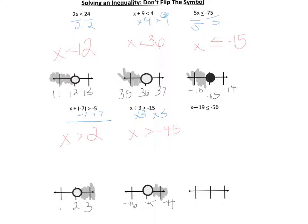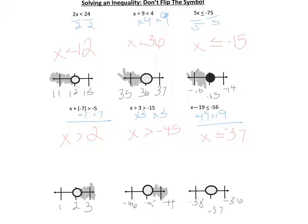For the last one on this page: x minus 19 is less than or equal to negative 56. We make a zero pair with 19 by adding 19 to both sides. The signs are different so we subtract, and we end up with 37. Since 56 is the larger absolute value and it's negative, x is less than or equal to negative 37. We have a closed circle at negative 37 because we're including it, and we shade everything that's going to be less than it.